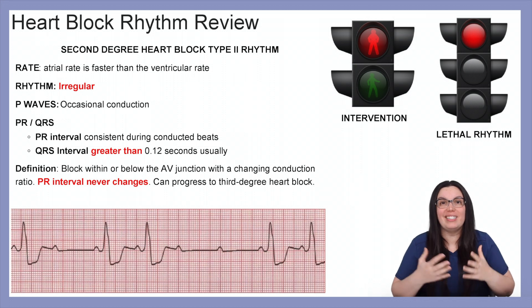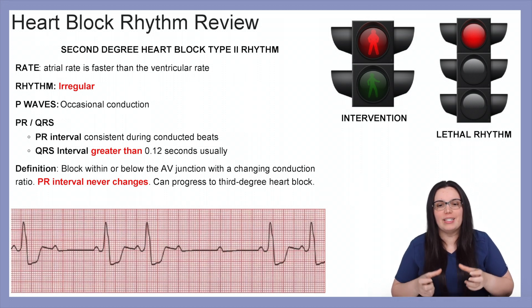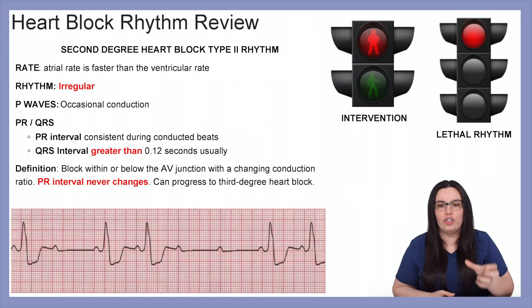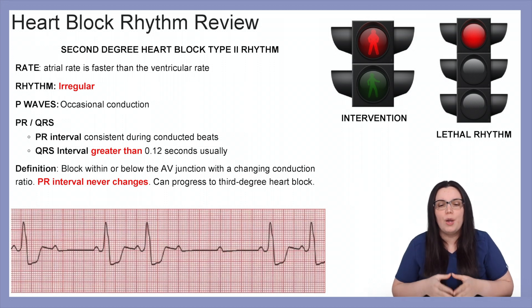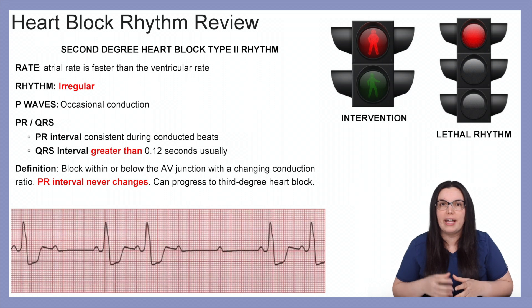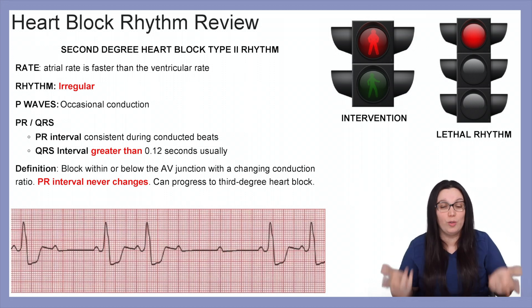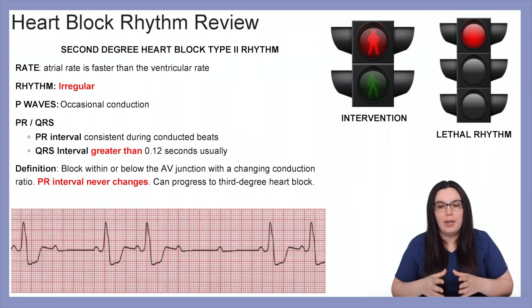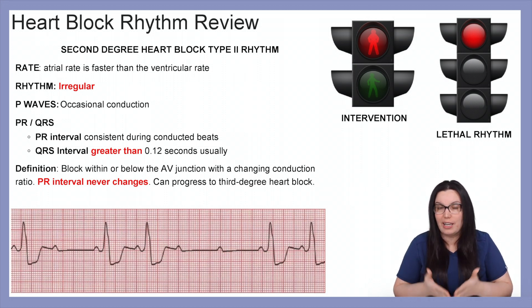Now for second degree type 2 heart block: the atrial rate is faster than the ventricular rate. The rhythm will be irregular and P waves will occasionally be conducted and occasionally won't. The PR interval during conducted beats will be consistent — unlike type 1 where the PR interval lengthens progressively before dropping, in type 2 the PR interval stays consistent. QRS intervals are usually greater than 0.12 seconds — they're going to be wide. The definition is a block within or below the atrioventricular junction with a changing conduction ratio. PR intervals never change, and if it does progress, it can lead into a third degree complete heart block.